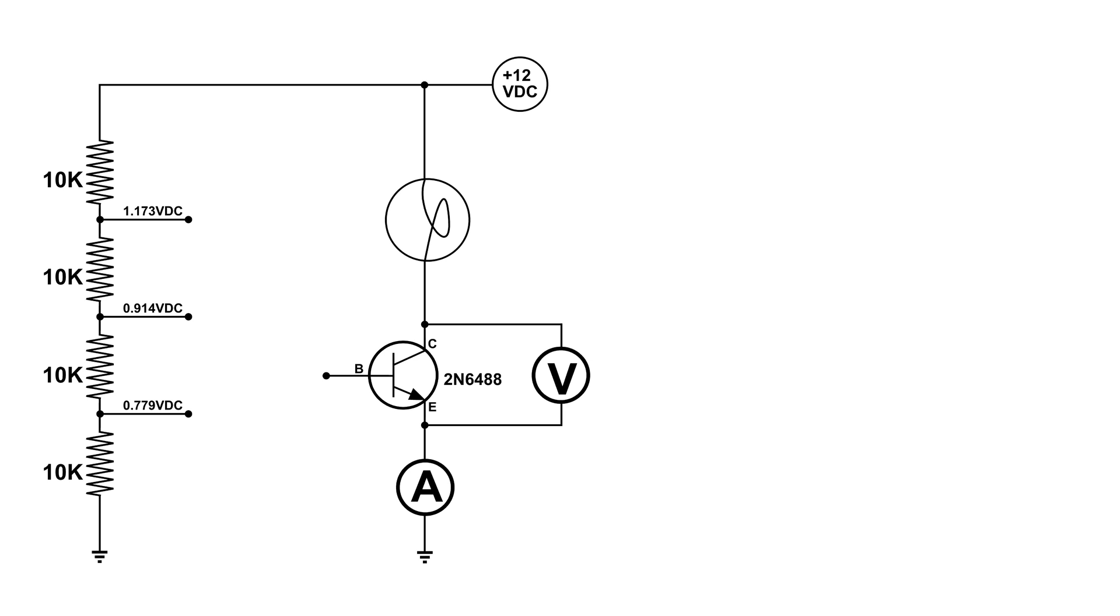Over to the left I have three bias points and we're going to start with the lowest which is 0.779 volts DC. We're going to start with connecting a wire from that point to the base of the NPN transistor. And I've got an ammeter in series with the NPN transistor and a voltmeter across the emitter and collector of the NPN transistor.